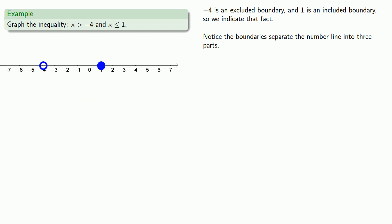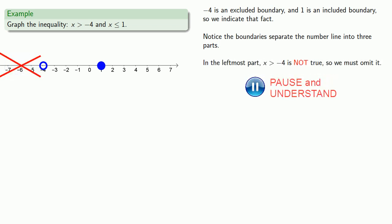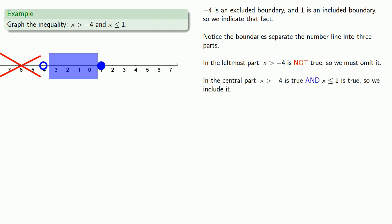So let's take a look at our three parts. In the leftmost part, x greater than negative 4 is not true, so we must omit this portion. In the central part, x greater than negative 4 is true, and x less than or equal to 1 is true, so we include this portion. And in the rightmost part, x less than or equal to 1 is not true, so we omit it.